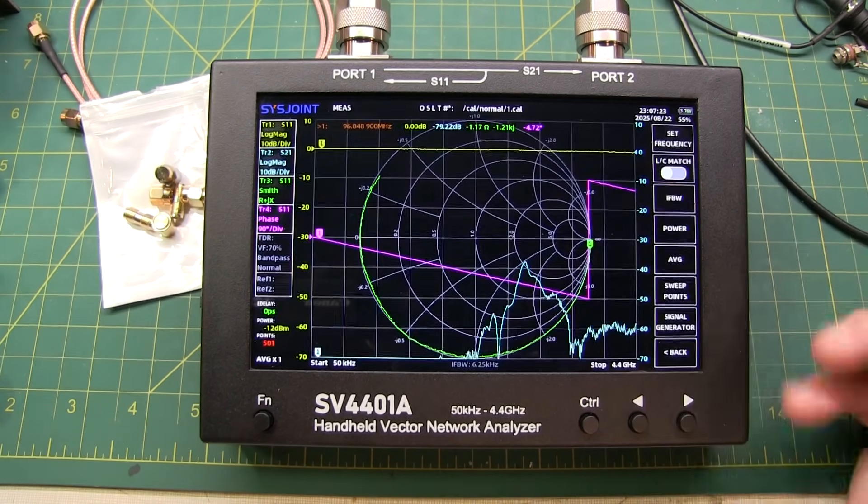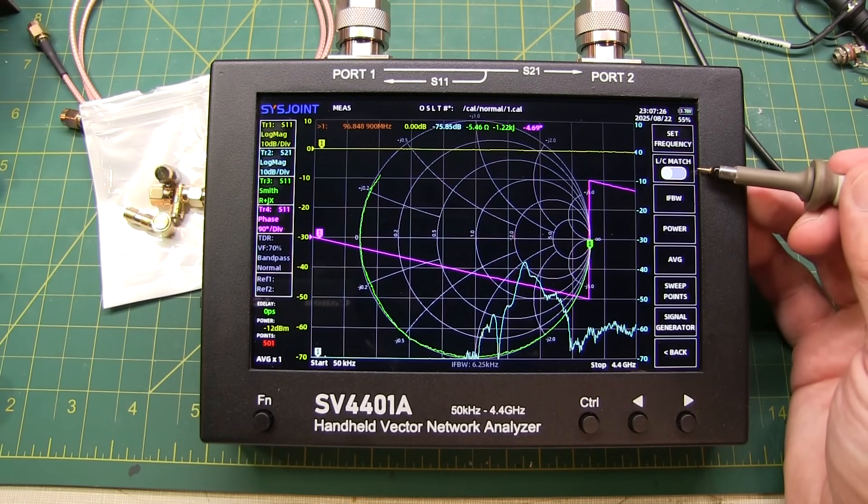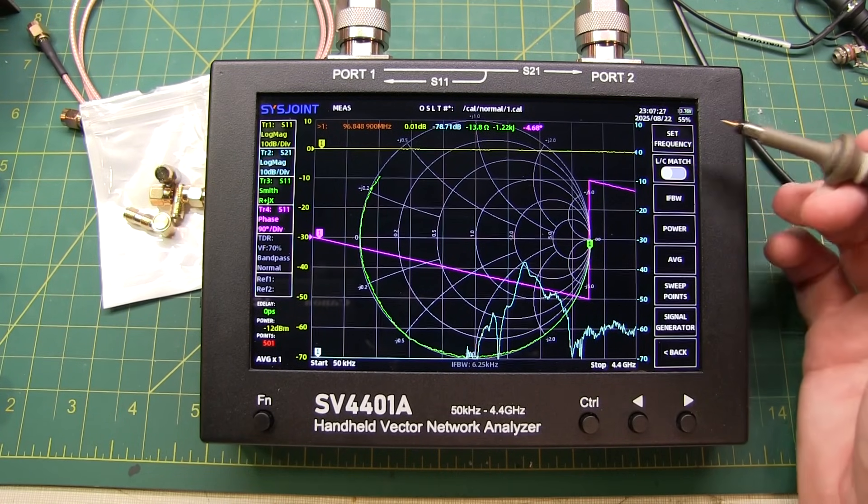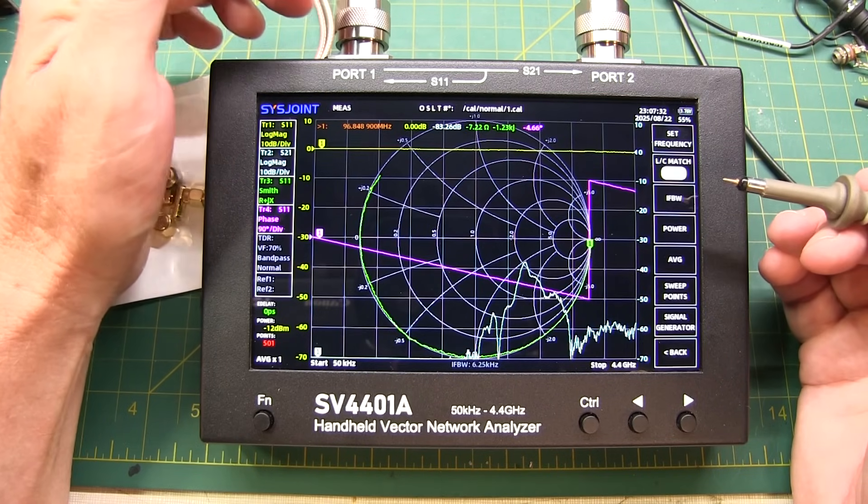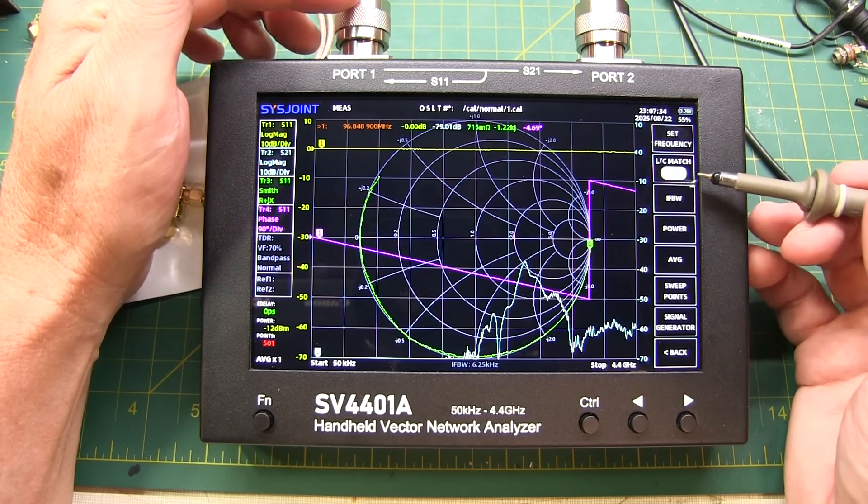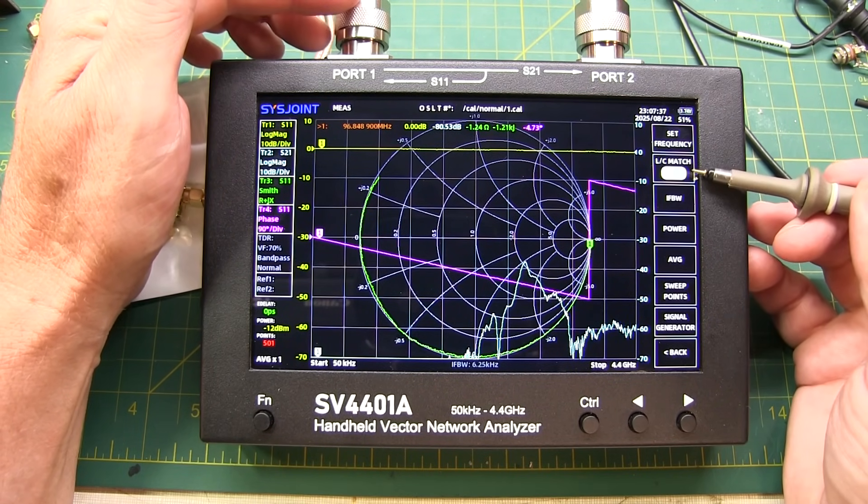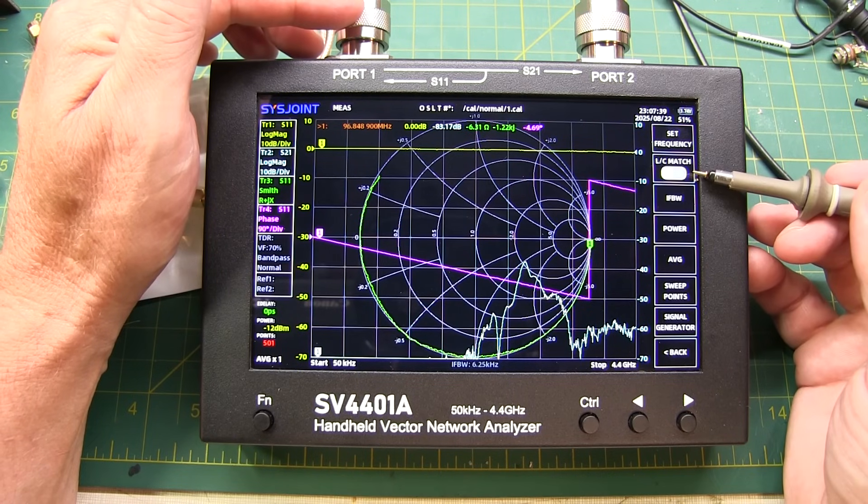Also under the stimulus menu is where you can actually configure the instrument to do a LC match. So if you've got a non-ideal impedance like an antenna connected up to port 1, you can have the unit calculate a proper LC matching network to match that at a particular frequency.